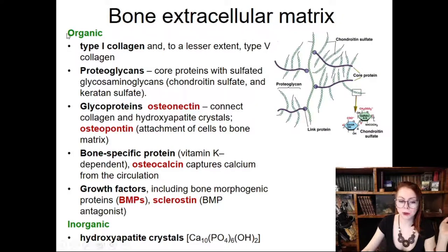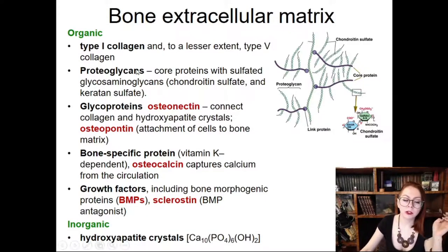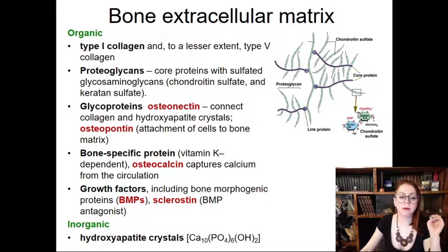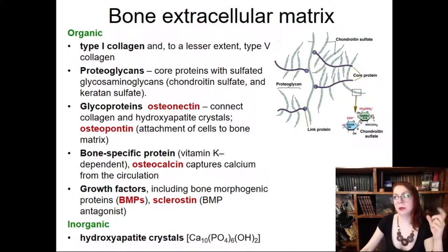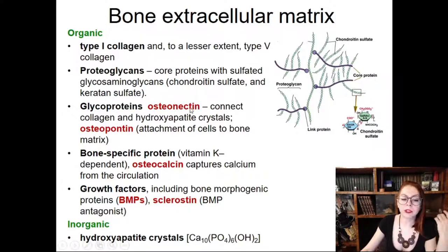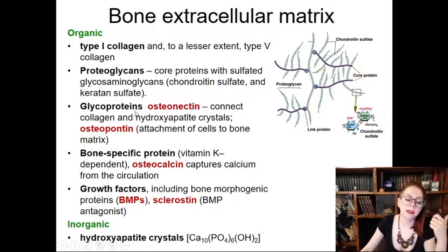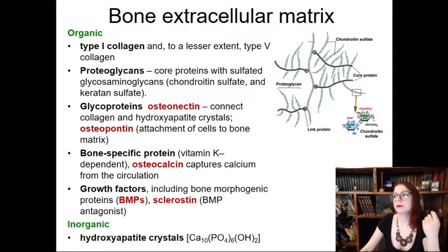As in all connective tissues, proteoglycans are represented by glycosaminoglycans and core proteins. As for glycoproteins — another name is multi-adhesive proteins — they provide adhesion between different components of the extracellular matrix and cells. Among others, you have to remember the glycoprotein osteonectin, which connects calcium with collagen — it is like a glue helping to adhere minerals to the fibers.